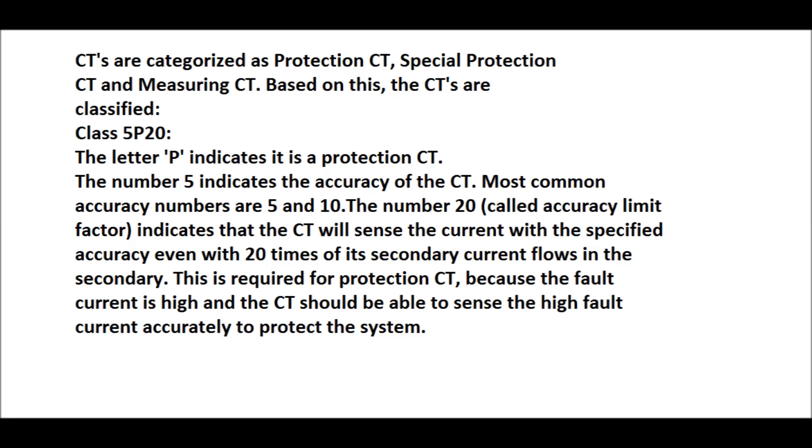The number 20, called the accuracy limit factor, indicates that CT will sense the current with the specified accuracy even with 20 times of secondary current flows in the secondary. This is required mainly for protection CT because the fault current will be as high as beyond 20 times during fault conditions. Therefore, accuracy protection of CT is required.